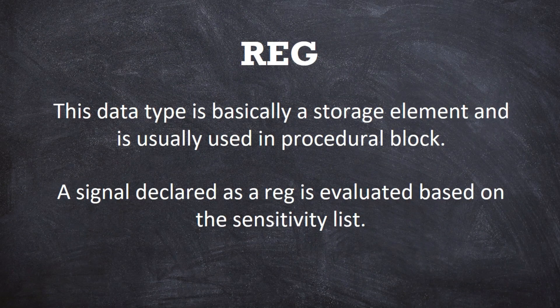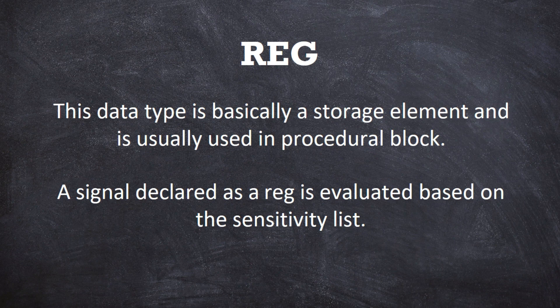Coming to register — in the data type, basically if we are talking about variables, that basically represents the storage element, and it is usually used in a procedural block. Procedural blocks are the initial or always block. Now let's see: if you have a register, how do you evaluate the sensitivity list?